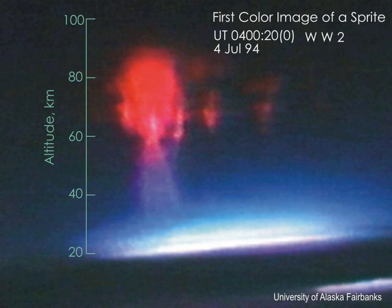Sporadic visual reports of sprites go back at least to 1886, but they were first photographed on July 6, 1989 by scientists from the University of Minnesota, and have subsequently been captured in video recordings many thousands of times. Sprites are sometimes inaccurately called upper atmospheric lightning. However, sprites are cold plasma phenomena that lack the hot channel temperatures of tropospheric lightning, so they are more akin to fluorescent tube discharges than to lightning discharges.